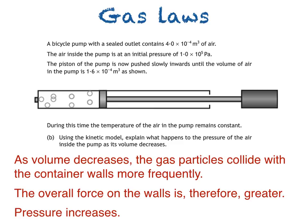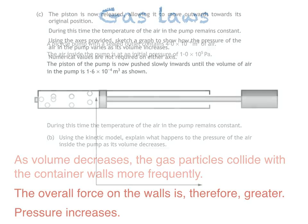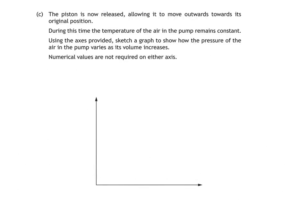Now it's time for the final part of the question, part C. The piston is now released, allowing it to move outwards towards its original position. During this time, the temperature of the air in the pump remains constant. Using the axes provided, sketch a graph to show how the pressure of the air in the pump varies as its volume increases. Numerical values are not required on either axis.